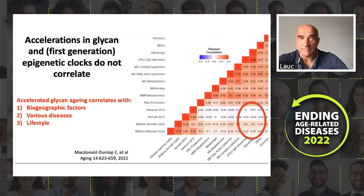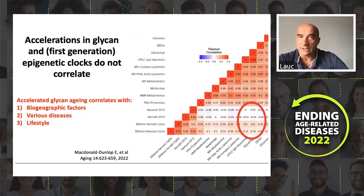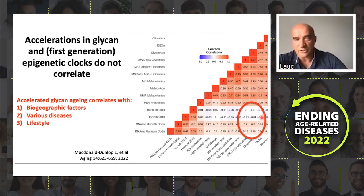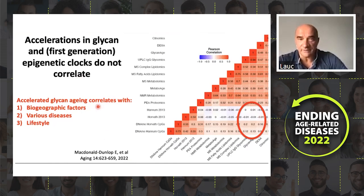Interestingly, the acceleration in glycan aging and the first generation of epigenetic clocks does not correlate well. Different clocks correlate because they all correlate with age, but the acceleration of some clocks correlates better with glycans than others. This is from a paper from the group in Edinburgh — some clocks correlate better with glycans, but the first generation clocks do not seem to correlate well with the acceleration of glycan aging. We know that acceleration of glycan aging correlates with biogeographic factors, different diseases, and lifestyle.